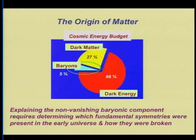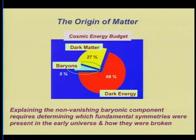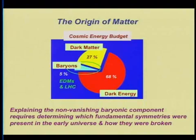Explaining this non-vanishing baryonic component requires determining which fundamental symmetries in the early universe were present and how they were broken. I'm also going to make contact with experiment and illustrate how two classes of experiments at very different energy scales can bear on this question of where the baryonic matter came from.